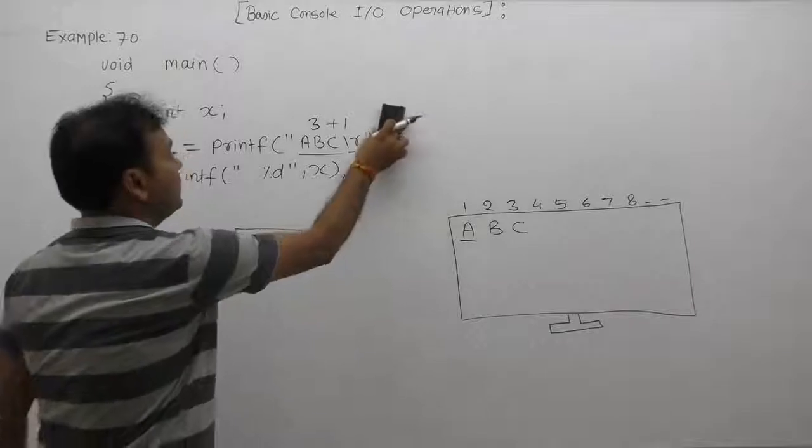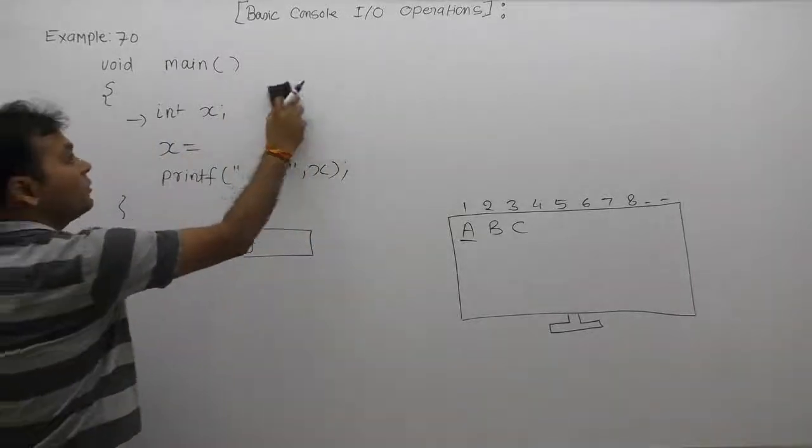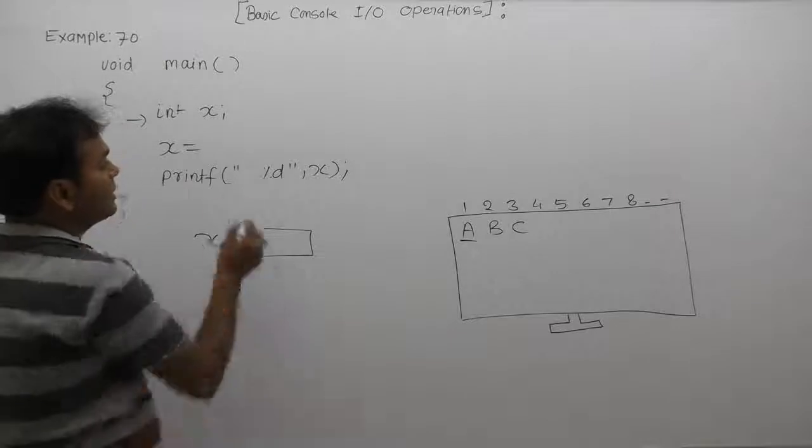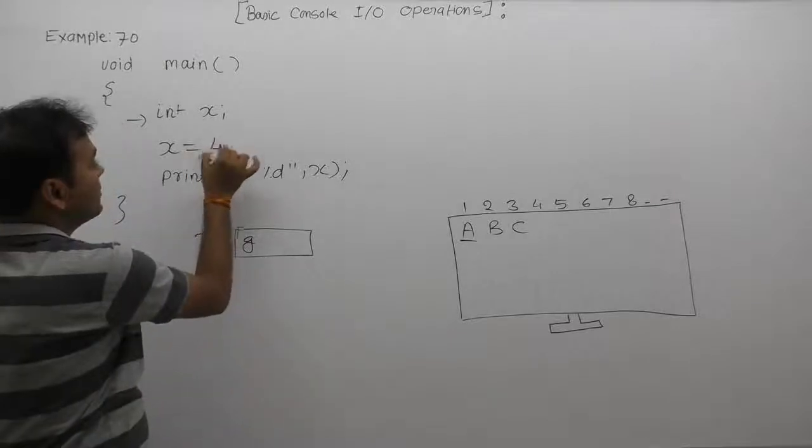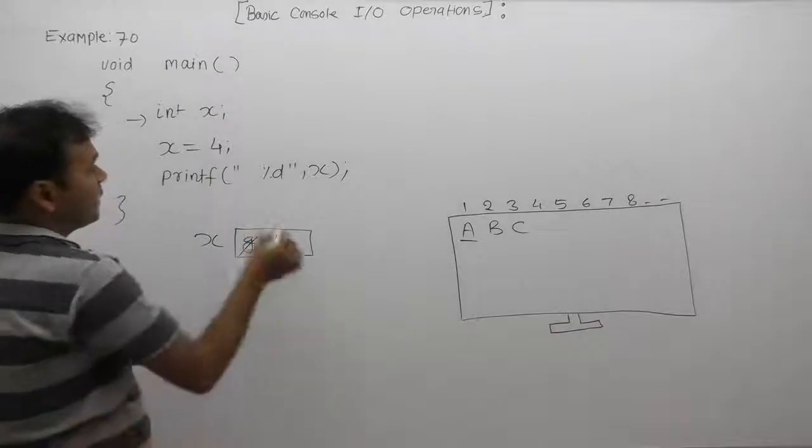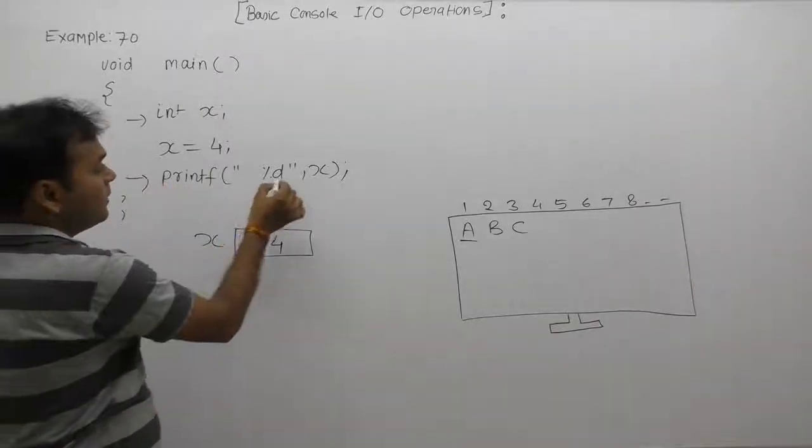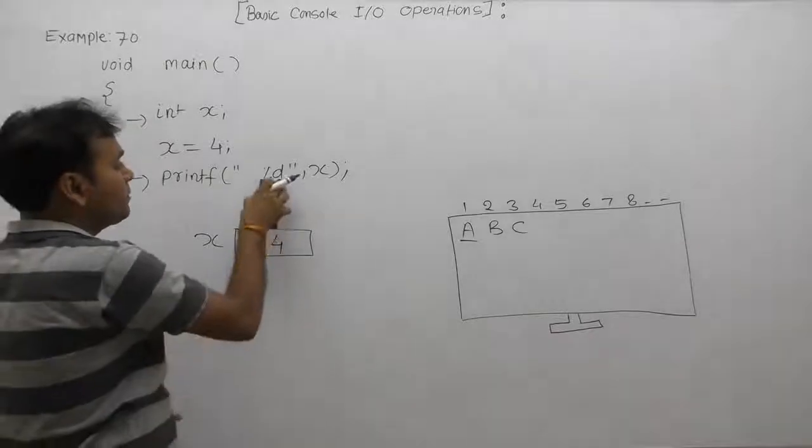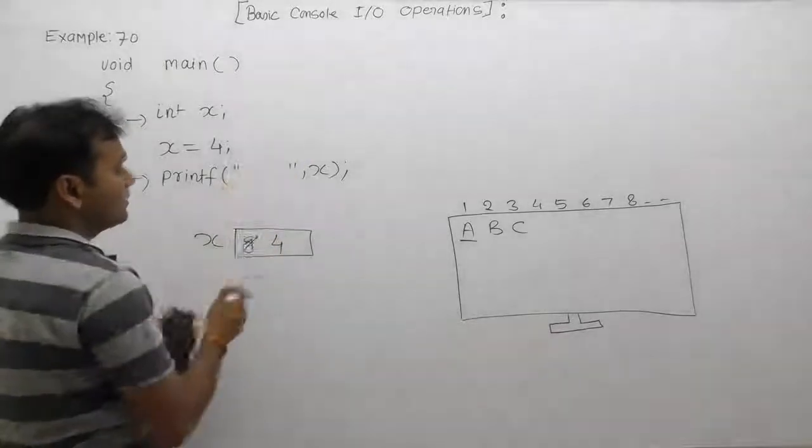Now value of x becomes four. According to next printf function, in place of percent d we are replacing value of x. Value of x is four, therefore it will be replaced by four.